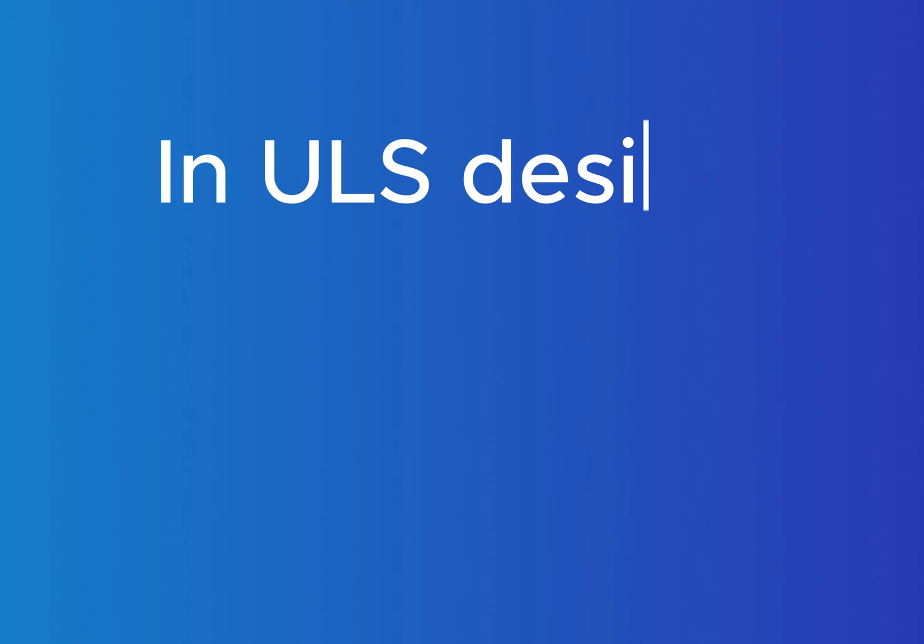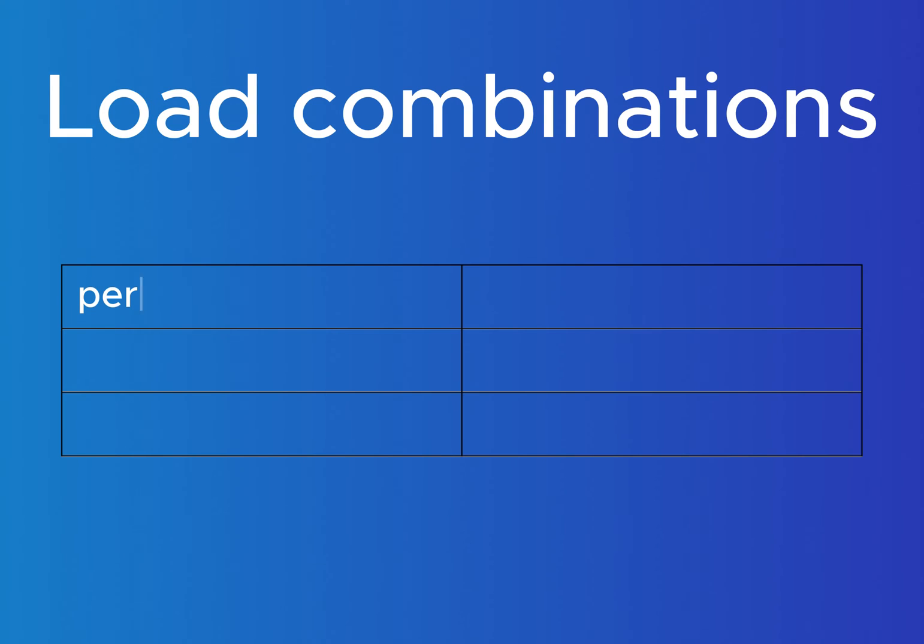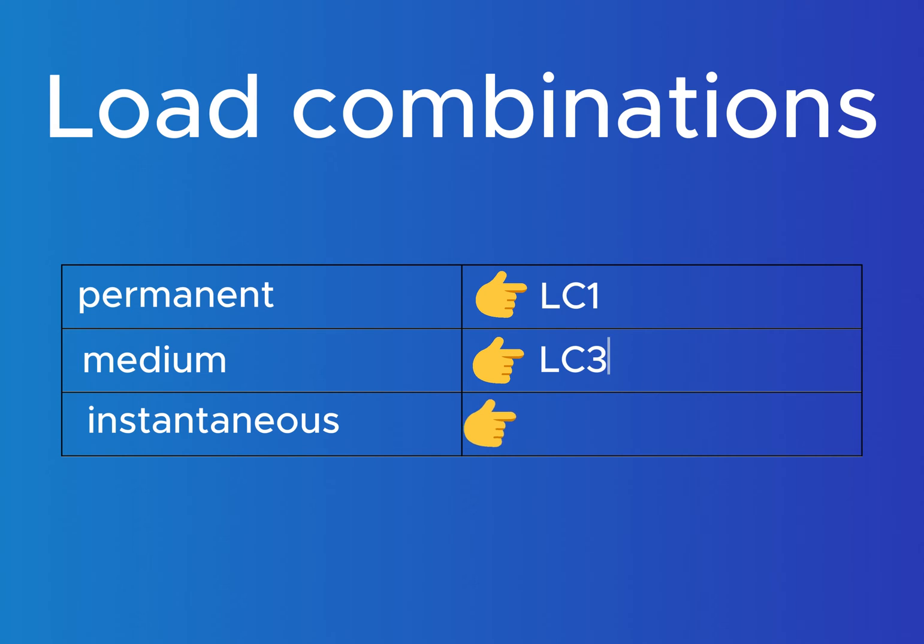In the ULS ultimate limit state design, we verify the stresses in the timber members due to bending and shear. Before we start calculating anything, we need to pick out the worst case load combinations for the permanent, medium term and instantaneous actions. Meaning the highest values, because those actions lead to different resistance stresses due to different K-Mod values.